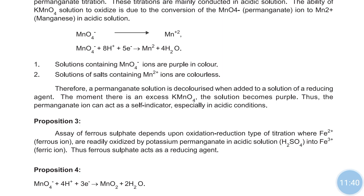Ferrous sulfate acts as a reducing agent; a reduction reaction occurs here. In ferrous sulfate, Fe2+ ferrous ions are readily oxidized by KMnO4 and converted into Fe3+ ion. Gain of electron takes place here. Oxidation is loss of electron and reduction is gain of electron. The reaction in FeSO4 is the conversion of ferrous ion to ferric ion, Fe3+. So ferrous sulfate acts as a reducing agent and KMnO4 is the oxidizing agent.